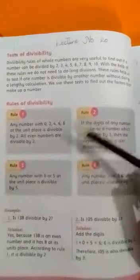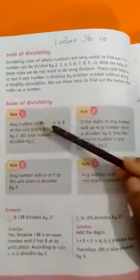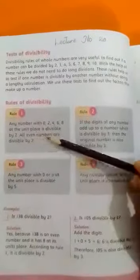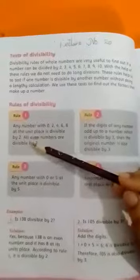Rule 1, Rule 2, 3 and 4. Rule 1 is, any number with 0, 2, 4, 6, 8 at the unit place is divisible by 2.